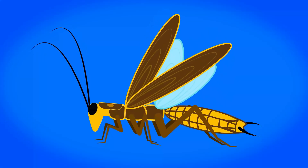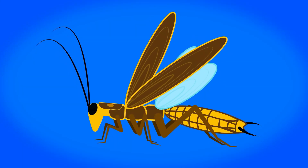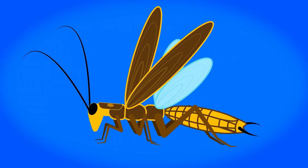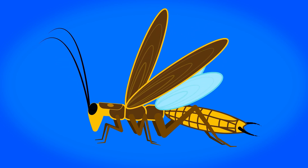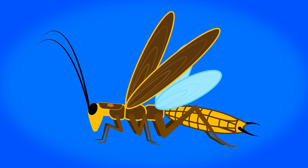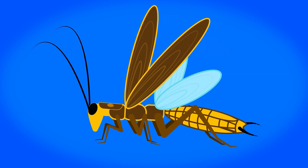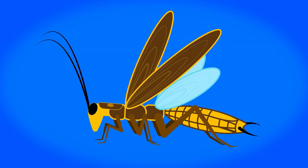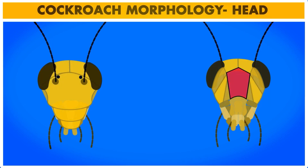The body of cockroach is divided into three parts: the head, thorax, and abdomen. Let us first get into the detailed morphology of the head.